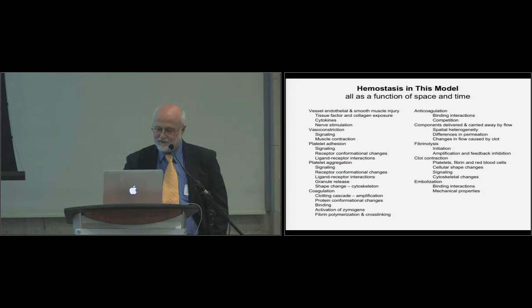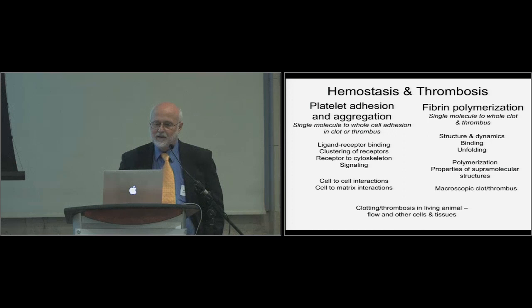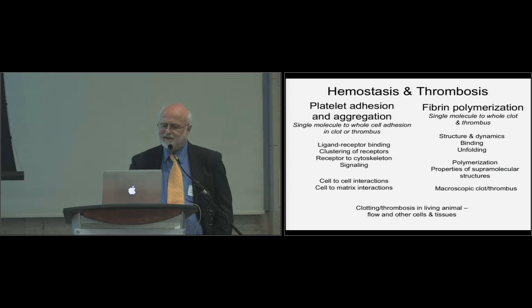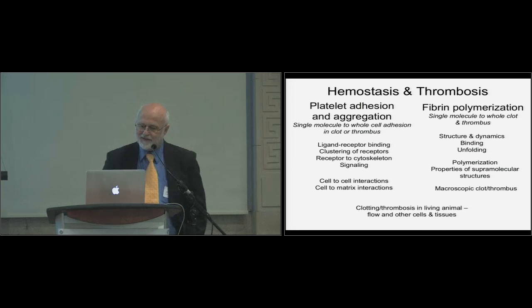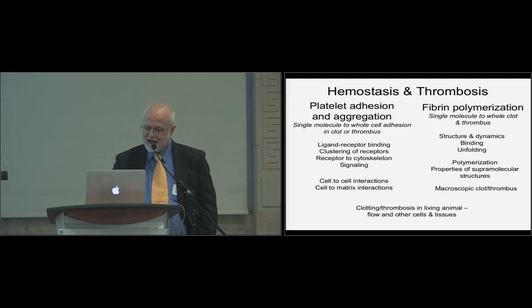Narrowing to the two areas I've worked on — platelet aggregation and fibrin polymerization — this list shows some of the processes we need to understand, from the molecular level down to the cellular level and then to the level of a clot or thrombus. We know some aspects at the molecular level, less at the cellular level, and there's still a lot to be learned in the living animal, which you'll hear about in Alyssa Wilberg's talk next.